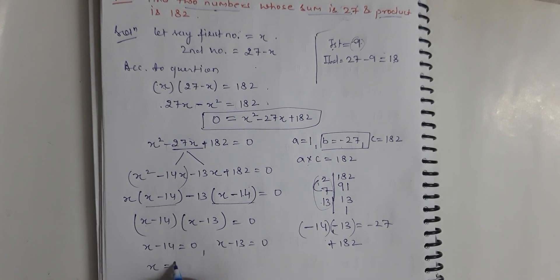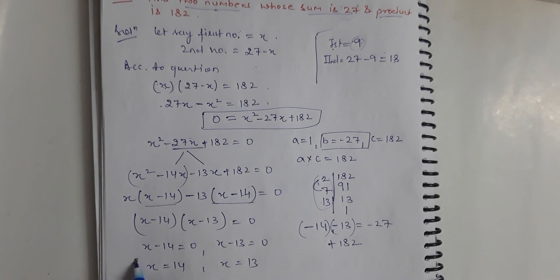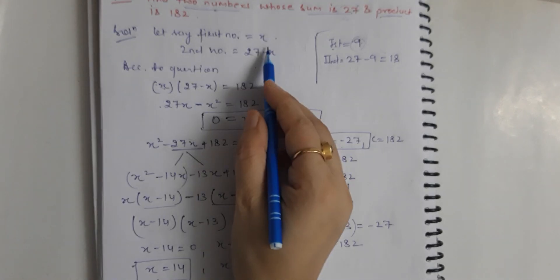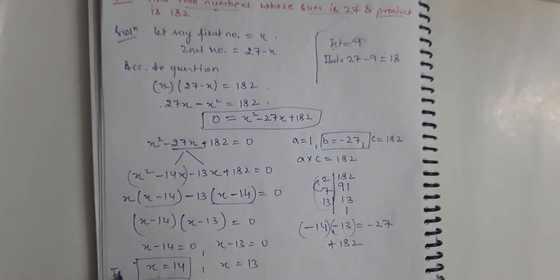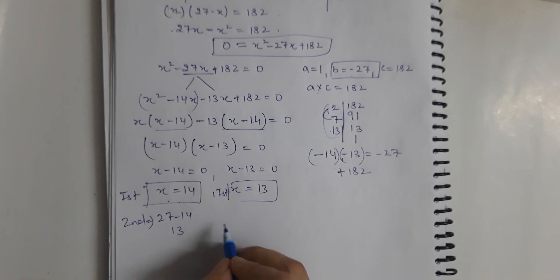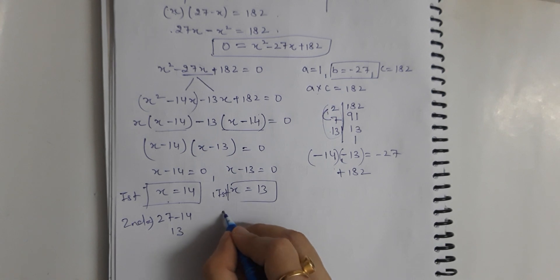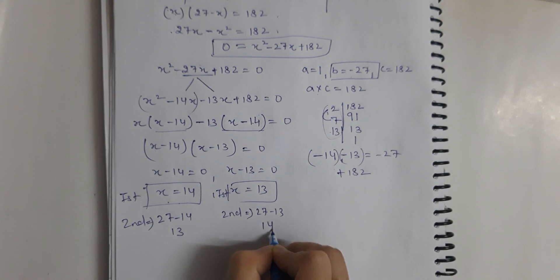This gives (x minus 14)(x minus 13) equals 0. Setting each factor equal to zero, we get x equals 14 or x equals 13. If the first number is 14, then the second number is 27 minus 14 which equals 13. If the first number is 13, then the second number is 27 minus 13 which equals 14.